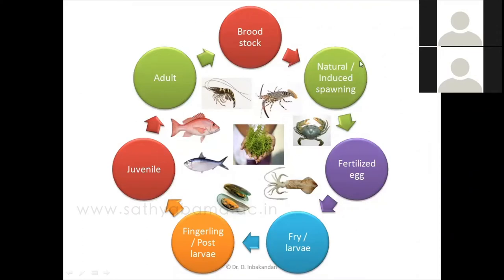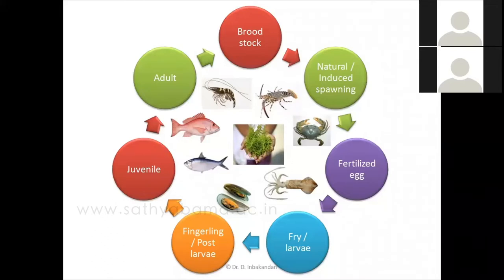At this particular stage, particularly from fry to fingerling, the animal — whether fry, fingerling, larvae, or post larvae — does not have a big or well-developed mouth part or digestive system. In that particular stage alone it needs a special food, and that is where artemia comes in. This is the stage where artemia as a live feed is very much important.